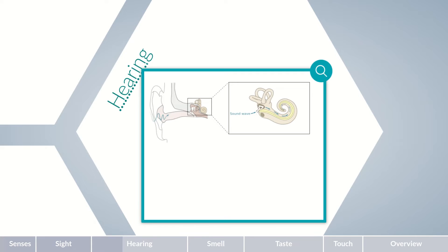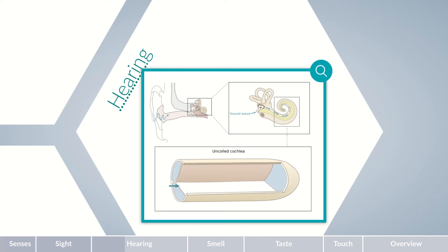This process ensures the transfer of 60 percent of the incoming sound. The sound wave transmitted to the cochlea generates a traveling wave in the basilar membrane, setting it in motion. The basilar membrane is narrowest and most stiff directly behind the oval window, but widens and becomes more flexible towards the apex of the cochlea known as the helicotrema.